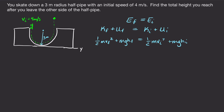We'll put the ground as y equals zero. Our initial height will be the radius of the half pipe — at all points from the center it's 3 meters, so we are 3 meters off the ground initially. Our initial velocity is 4 meters per second. When we get to the maximum height on the other side, we're going to stop, so our final kinetic energy is zero. We have some final potential energy, initial potential energy, and initial kinetic energy.